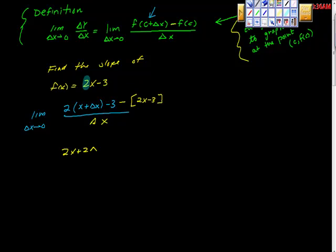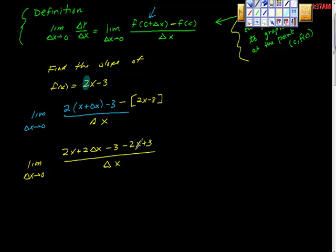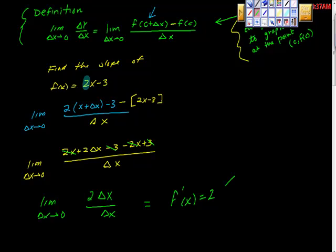Distributing and simplifying, we get 2x + 2Δx − 3, then distributing the negative sign gives minus 2x + 3, all over Δx. We're still in the limit process. We cancel: 2x cancels 2x, and −3 and +3 cancel. Now we have the limit as Δx → 0 of 2Δx / Δx. Since Δx/Δx = 1, we get f'(x) = 2. That is the slope — and you knew that from algebra.